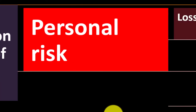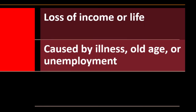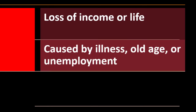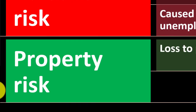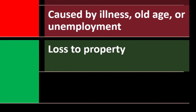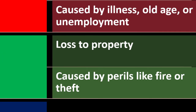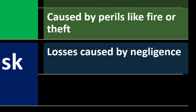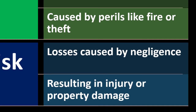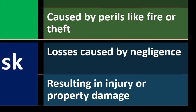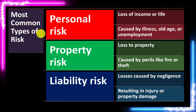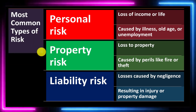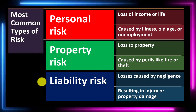The most common types of risk fall into three categories: personal risk, which includes loss of income or life caused by illness, old age, or unemployment; property risk, which is loss of property caused by perils like fire or theft; and liability risk, which involves losses caused by negligence resulting in injury or property damage.